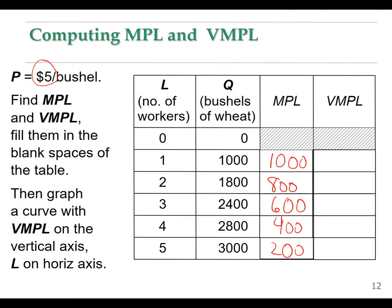Now we're going to multiply this by the price of each bushel - this is a perfectly competitive agricultural market - times five dollars. So this is going to be 1,000 times five, so $5,000. In other words, this first worker makes us $5,000. Second worker, 800 times five is $4,000. The next worker makes us $3,000, the next worker makes us $2,000, and finally the last worker makes us $1,000.